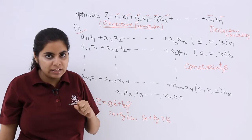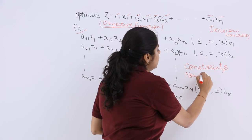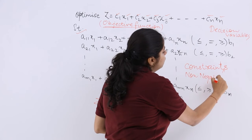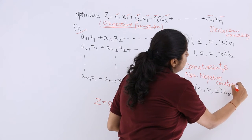Then the next that we have is non-negative constraints. What are those called? Non-negative constraints. Non-negative constraints are the special type of constraints which can never be negative.